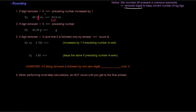Rule two: if the digit being removed is less than five, the preceding number stays the same. For example, with 82.34, the 4 is less than five. So you remove the 4, and 82.3 stays as 82.3 — it does not round up to 82.4.